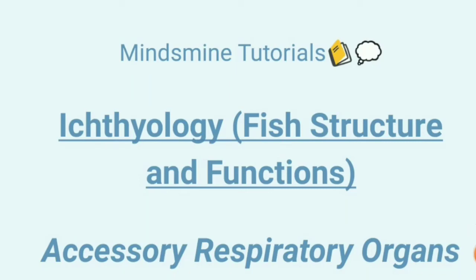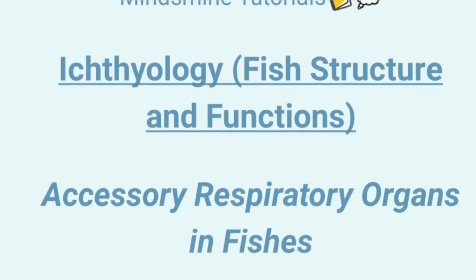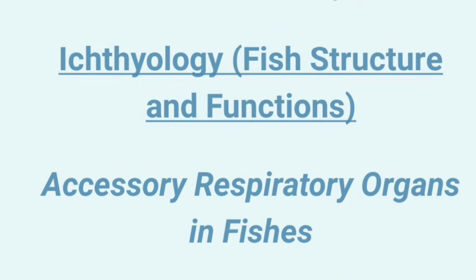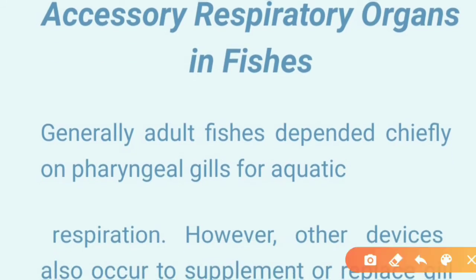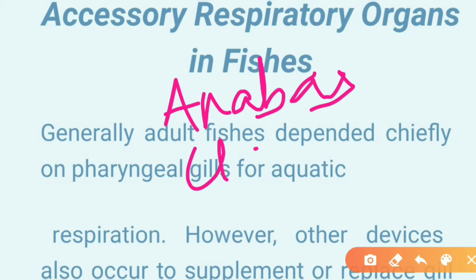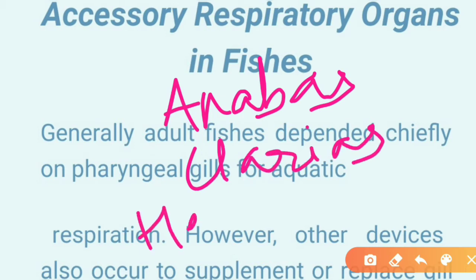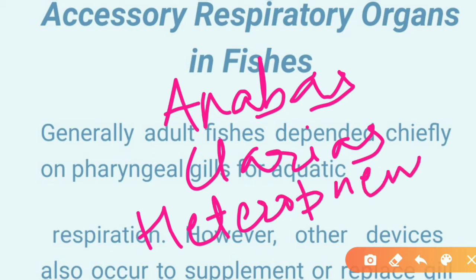Hello students, welcome back to Mind Swine Tutorials. Today's topic is from the subject ichthyology, also known as fish structure and functions. Our topic is accessory respiratory organs in fishes. This video will cover some introductory parts: what accessory respiratory organs are, the basic types, and the three fishes we will focus on — Anabas, Clarias, and Heteropneustis.